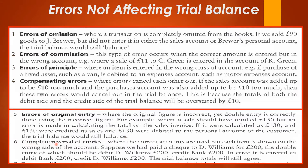Finally we have complete reversal of entries, where the correct amounts are used but each item is shown on the wrong side of the account — that is, you got the entry in backwards. Beginners often make that error. Suppose we paid D. Williams $200 — the double entry should be debit D. Williams $200, credit bank $200. In error it is entered as debit bank $200, credit D. Williams $200. The trial balance would still agree.